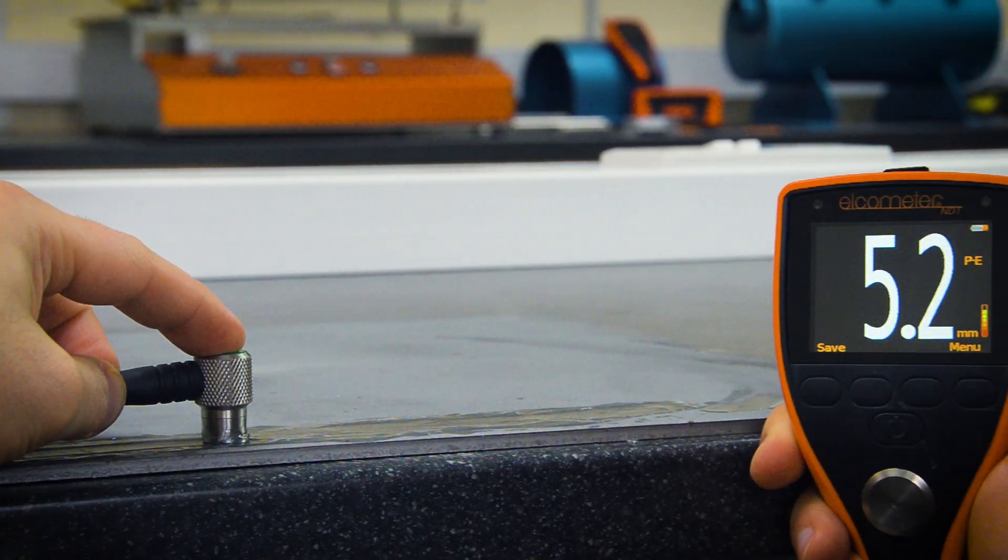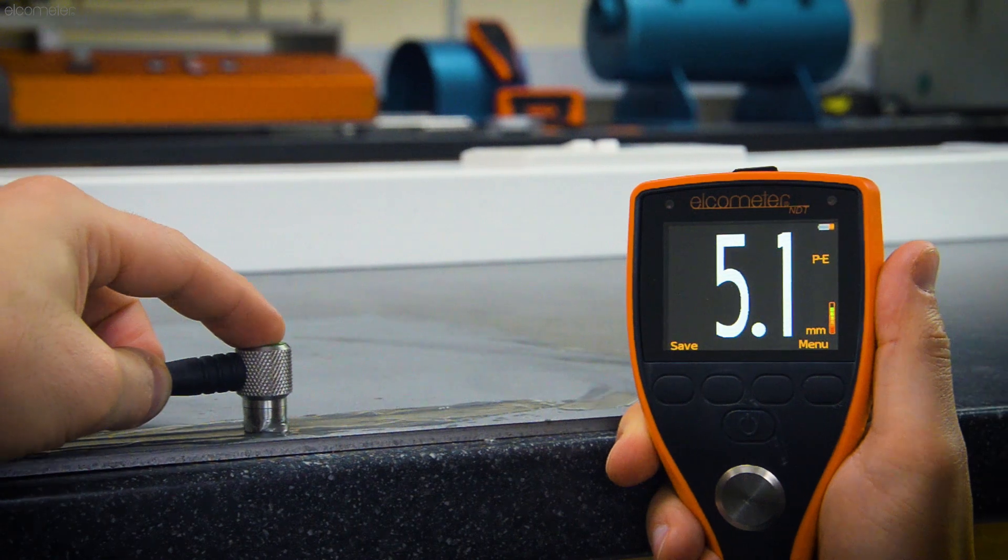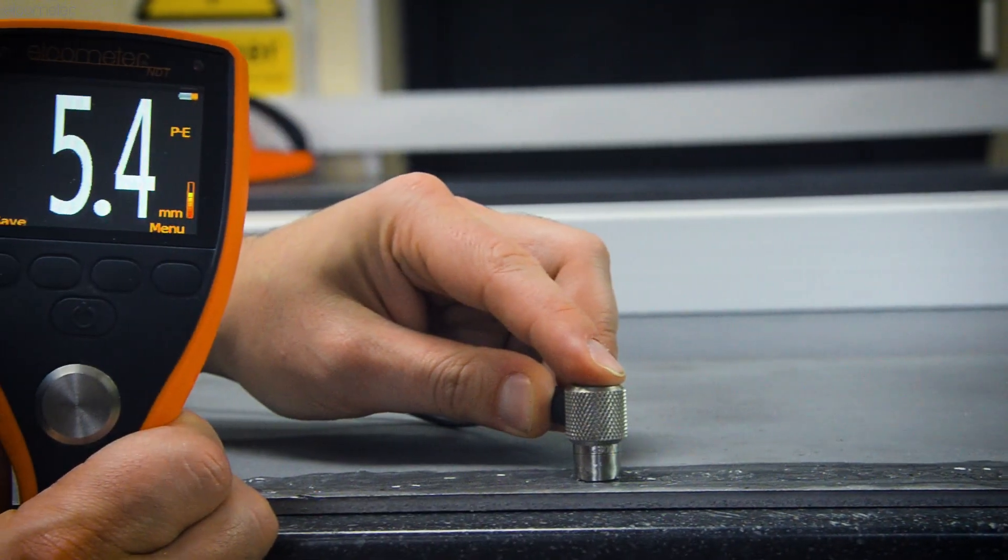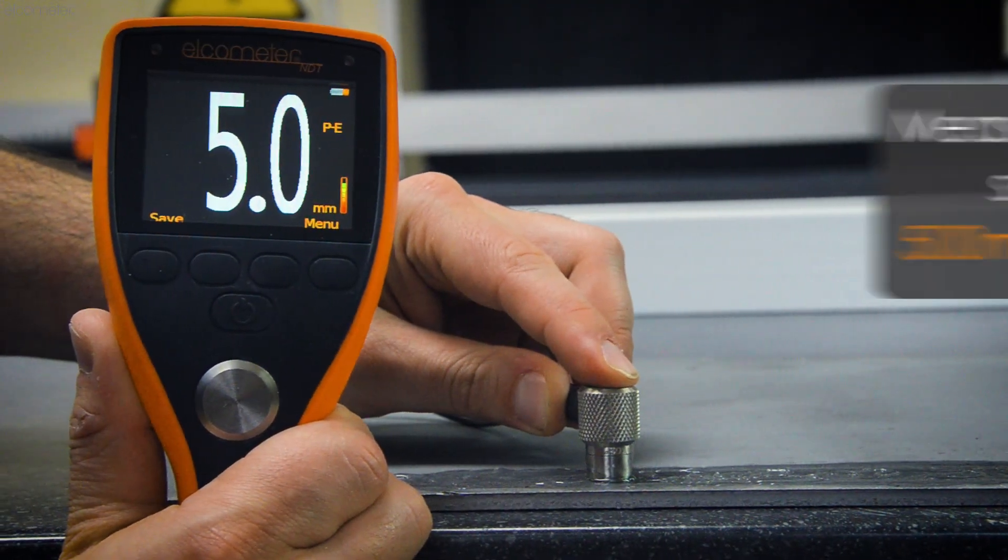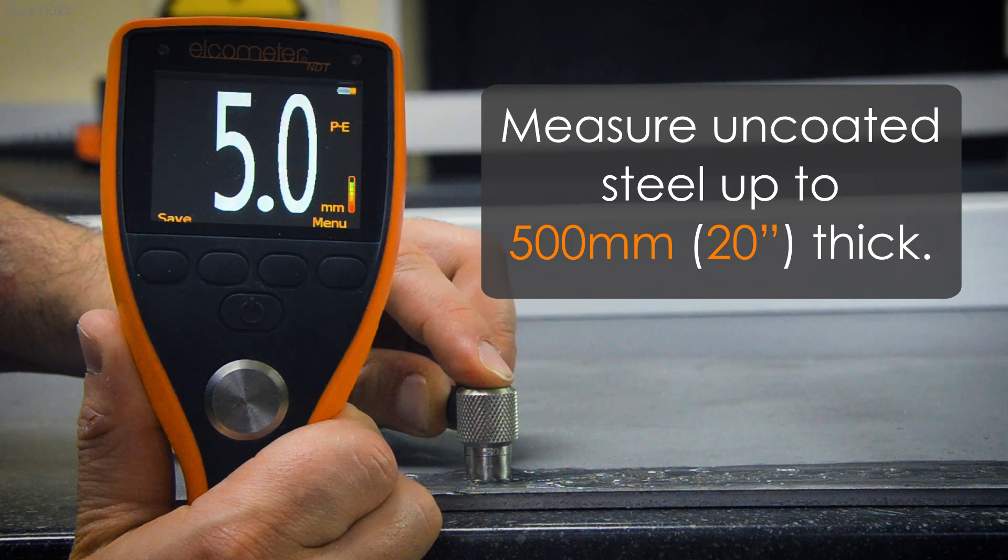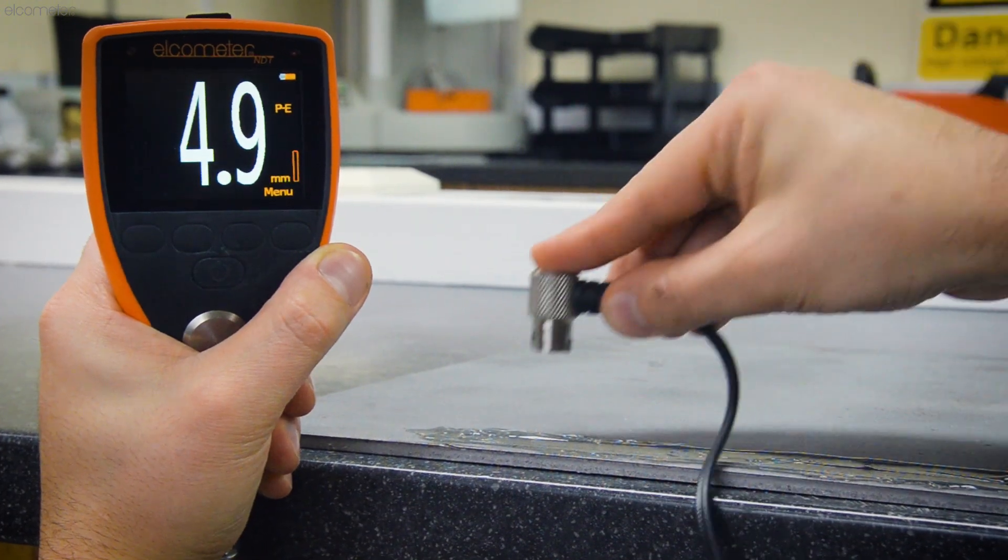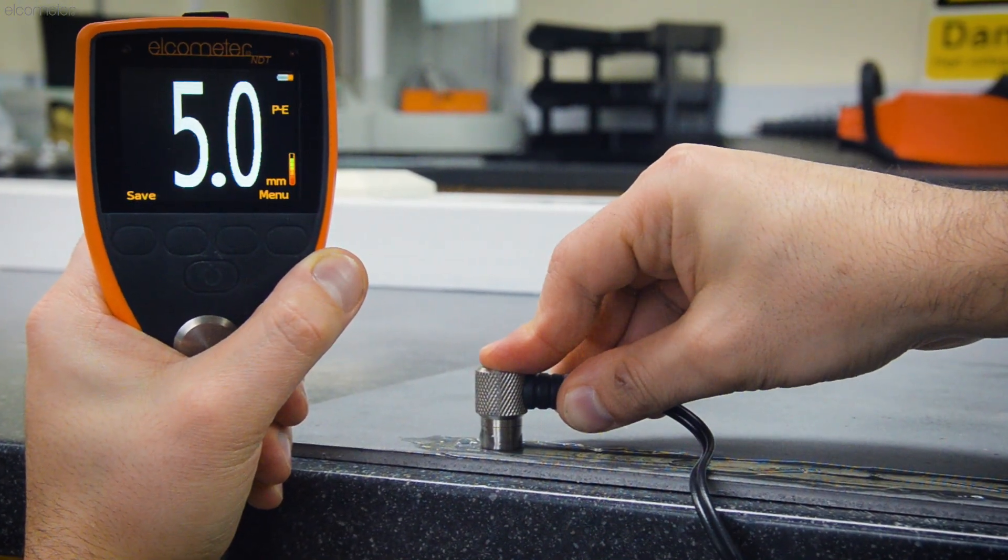With a pre-set measurement rate of 4 readings per second or 4 hertz, the Elcometer MTG2 can measure uncoated steel up to 500mm or 20 inches thick, with a maximum accuracy of ±1% across its range.